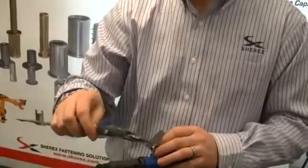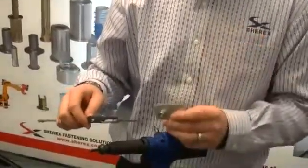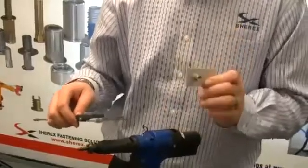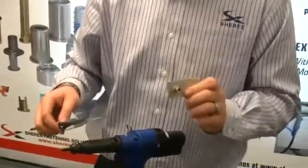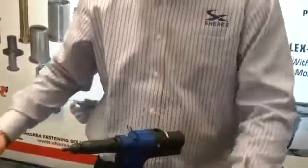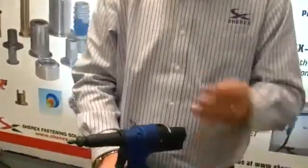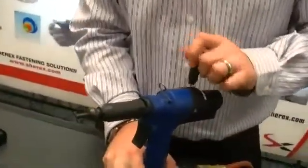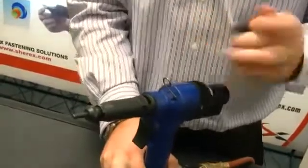We are currently at 445 thousandths, and the recommended installed length for this style of rivet nut is below 380 thousandths. So, we have a little bit more pulling distance that we require. I will take our tool and turn the stop block farther out.